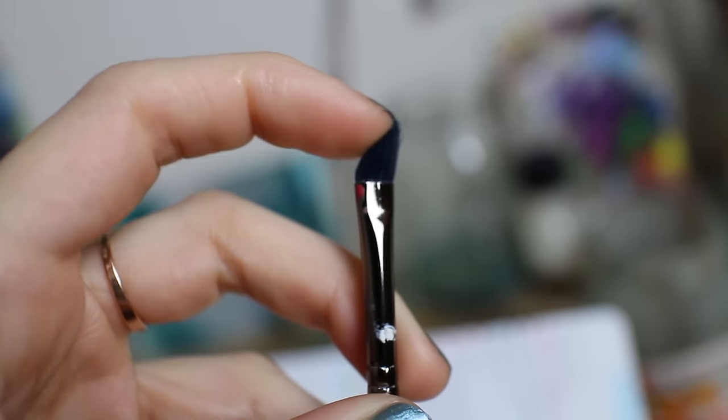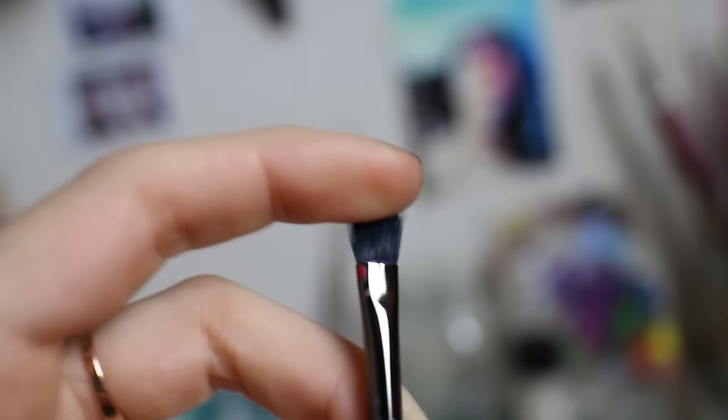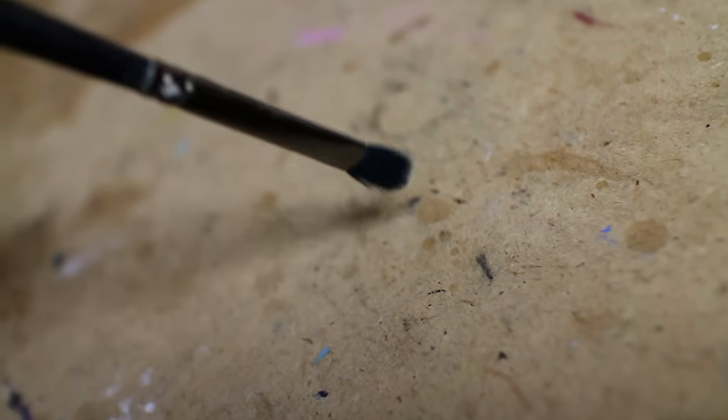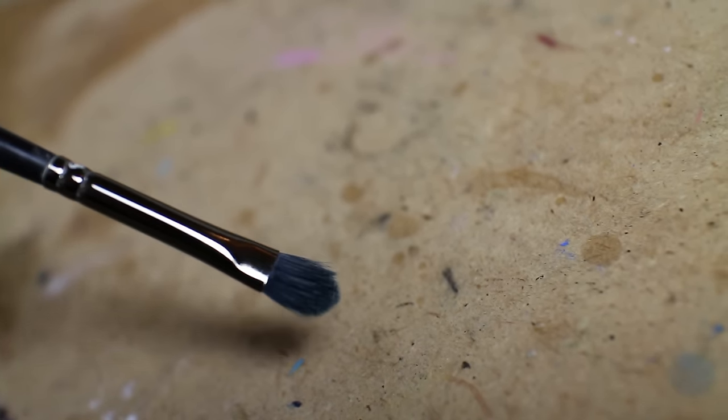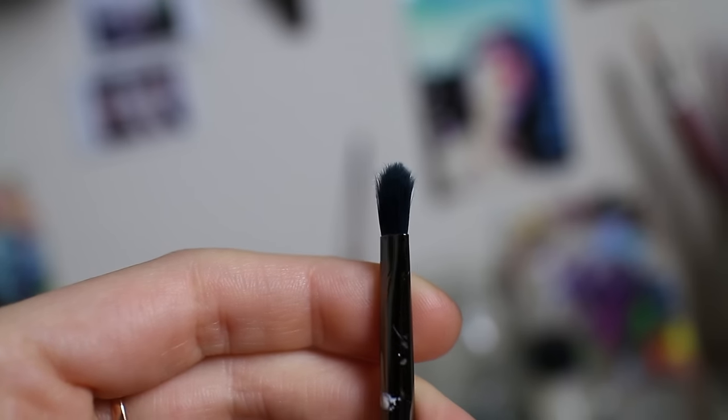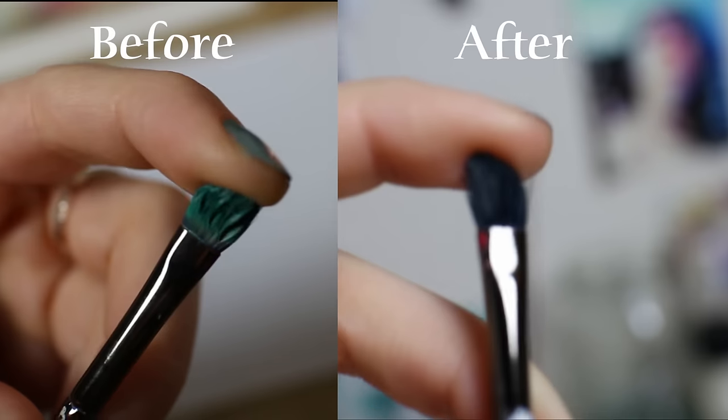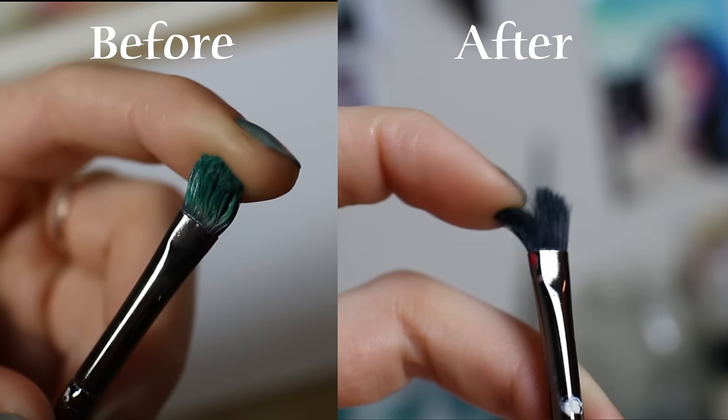Of course it's not going to go back to being 100% perfect because when paint dries on your brush it does do some damage. But this brush is definitely usable again whereas before it wasn't. And if there are some bristles that stick too far out I just chop them off and give the brush a little haircut, which is probably terrible advice but you know, oh well.